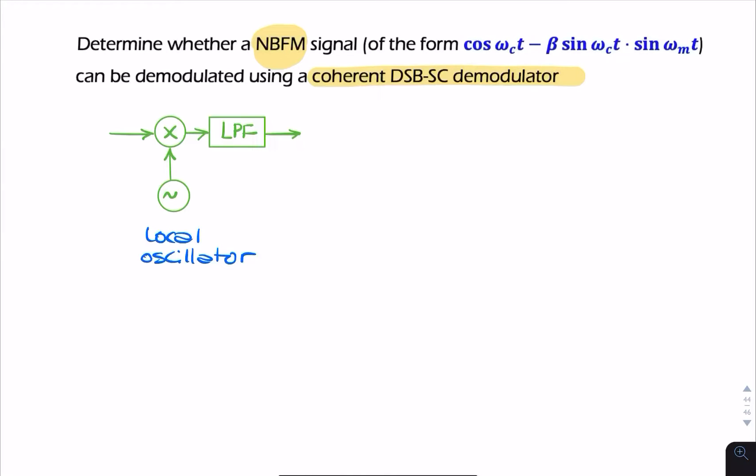So the question essentially is asking, if we have narrowband FM, S(t), going in here, can we have here the integral of that, so our original message? Some scaled version of cosine ωₘt. That's the question.